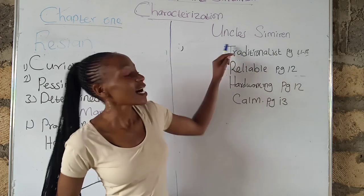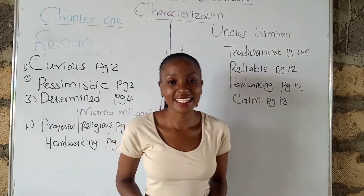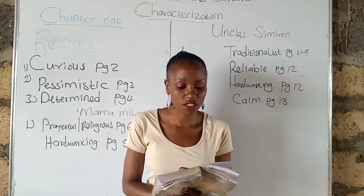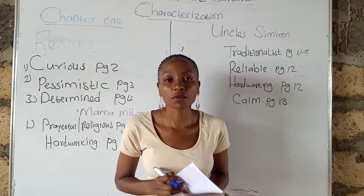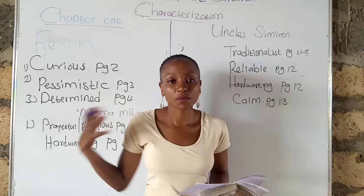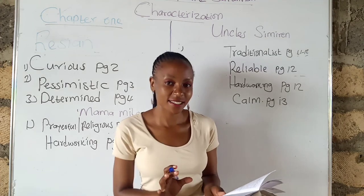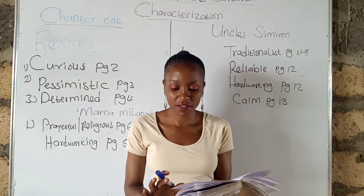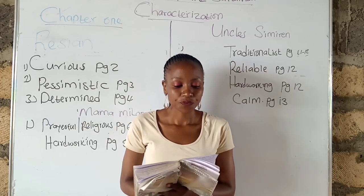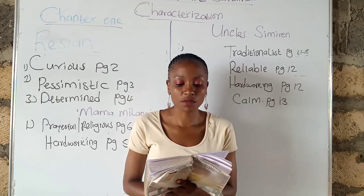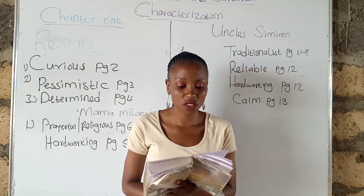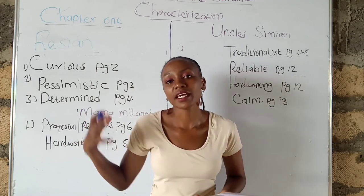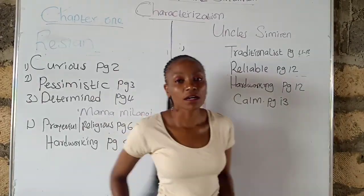Now we move to the last character: Uncle Simiren. Number one, he is a traditionalist — he had four wives, and in the text we are told he was a strict adherent to his people's customs and traditions. We are also told he represented the Molyian clan in all traditional ceremonies. Page eleven to twelve: 'He was a strict adherent to his people's customs and traditions, for which reason he was respected and appreciated by the elders.' He also had four wives, as noted on page twelve.